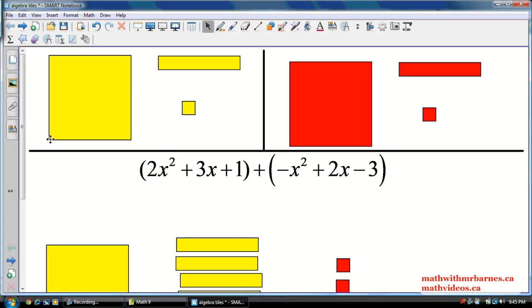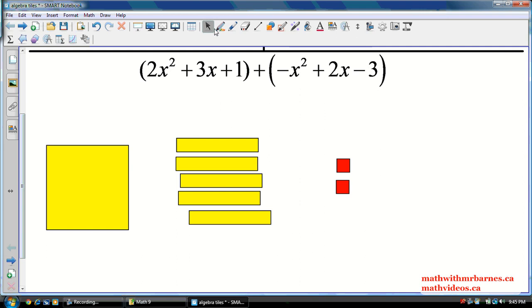So now what I'm left with here, I'm left with x squared plus 1, 2, 3, 4, 5, 5x and then minus 2. So x squared plus 5x minus 2. That's my addition problem right there. Done. So I added my two polynomials using my algebra tiles.